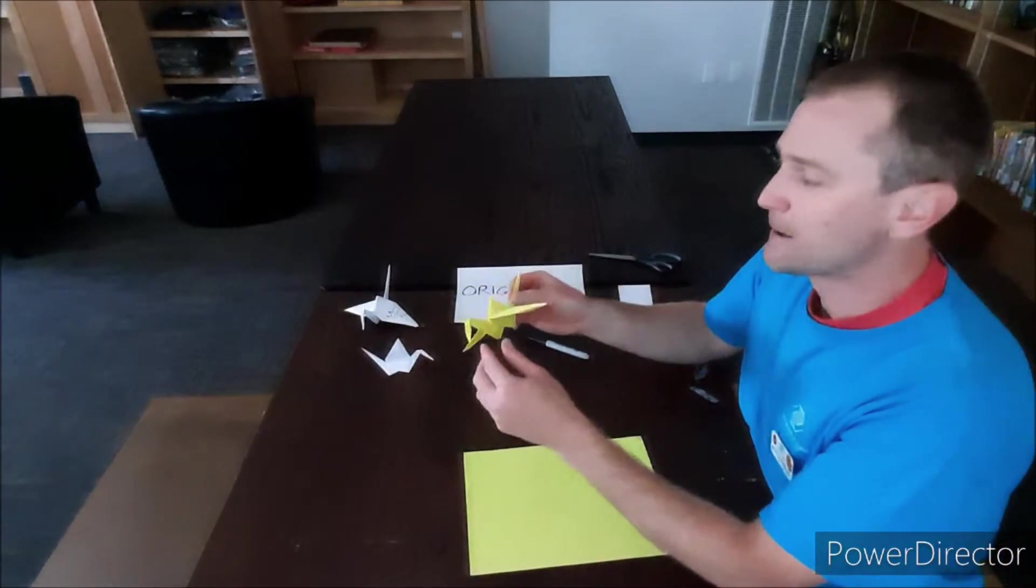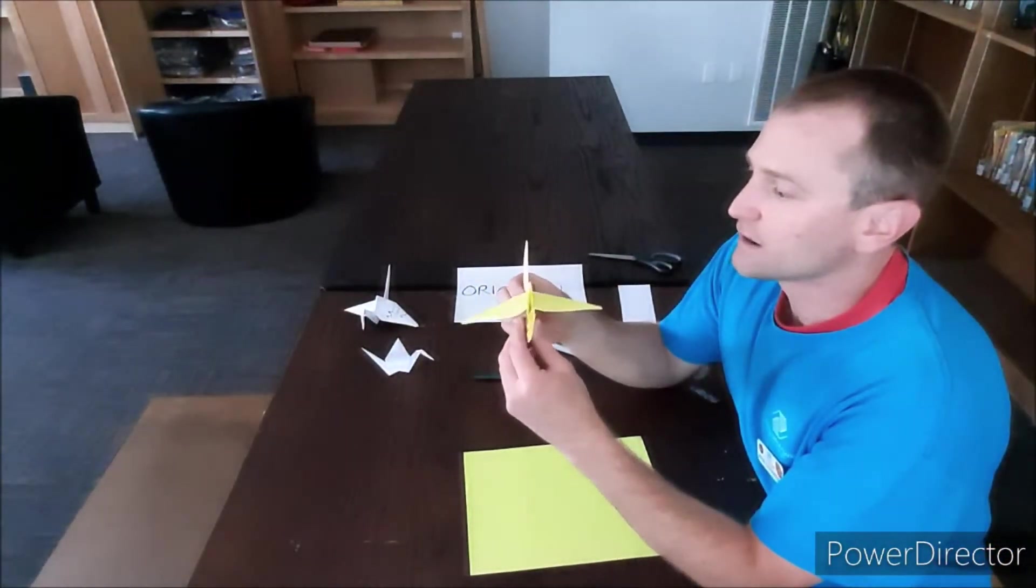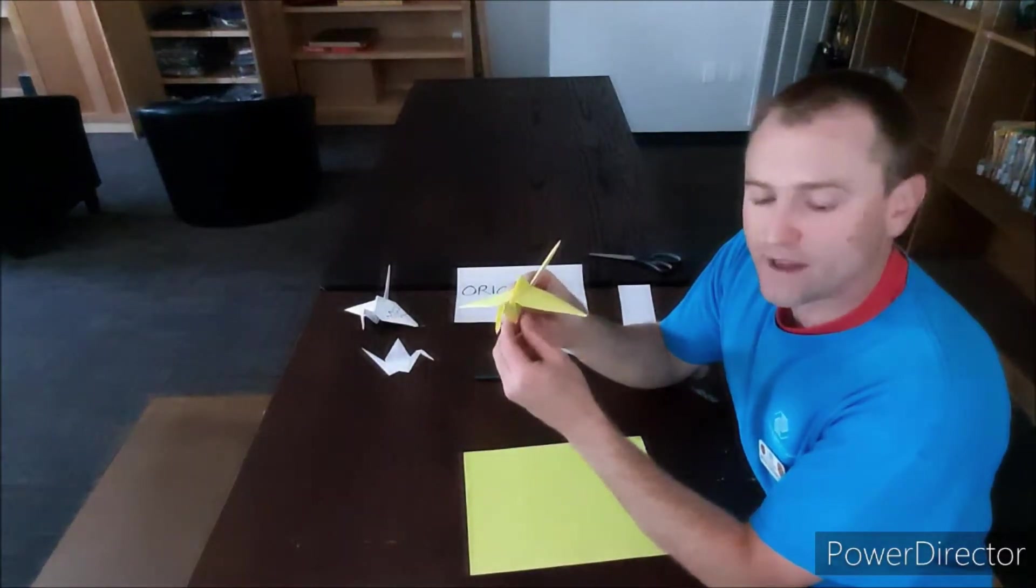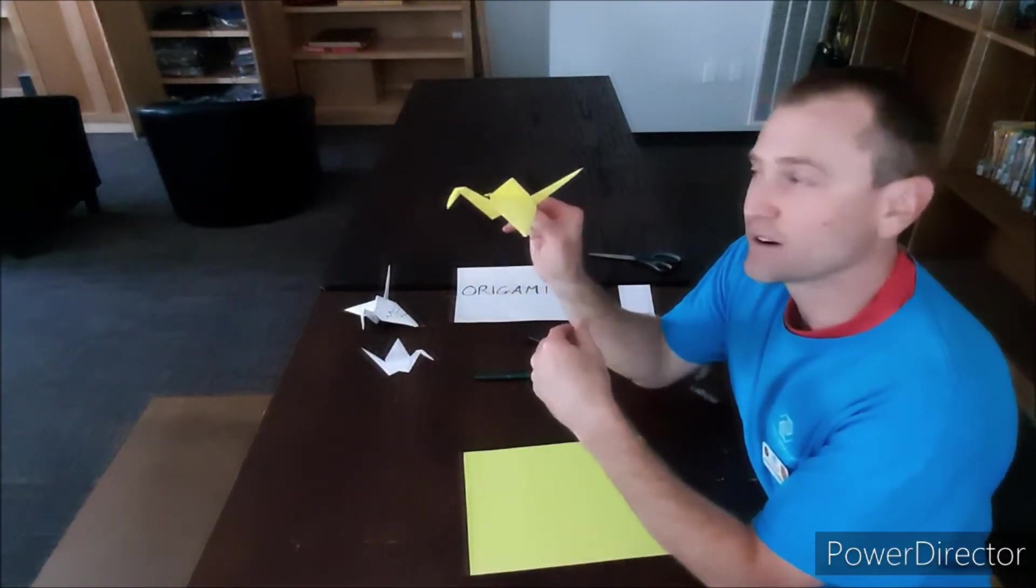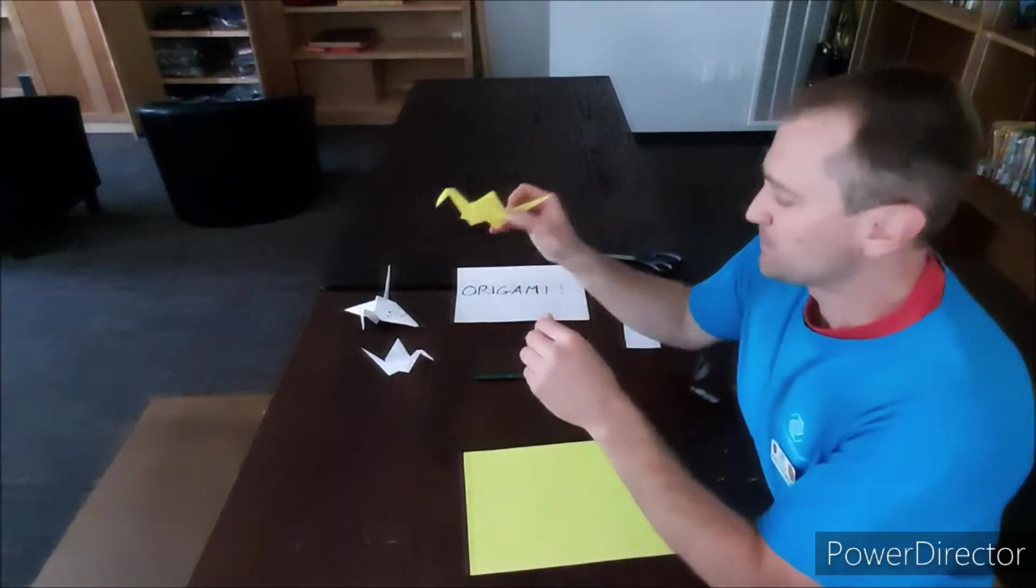You see three of them sitting out here. The paper crane is a classic design in origami, and it's believed in Japanese culture that the wings carry the soul to paradise. So it's called Orizuru, the paper crane.